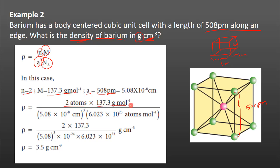So, 2 atoms times the molar mass goes in the numerator. The edge length, 5.08 times 10 to the power minus 8 centimeters, is cubed for the volume. The denominator also includes Avogadro's number: 6.023 times 10 to the power 23 atoms per mole.